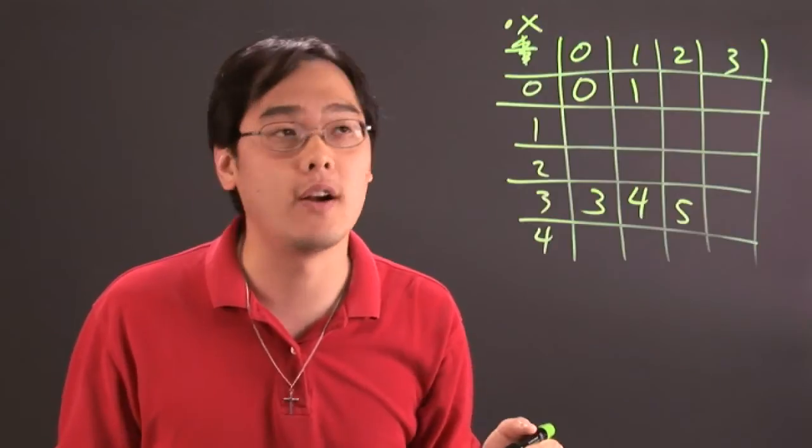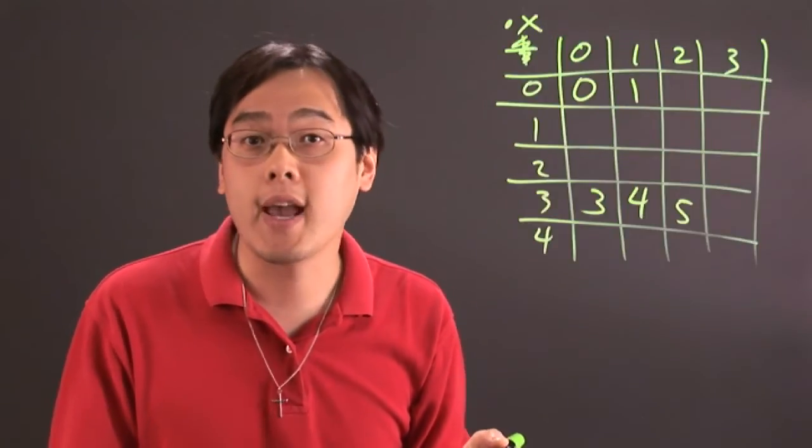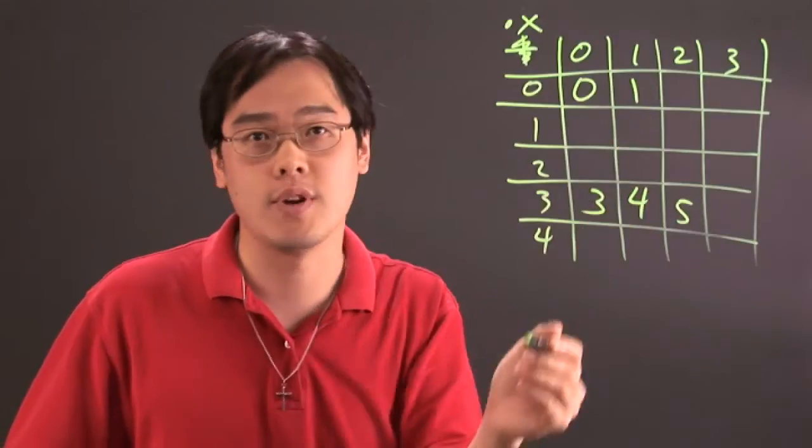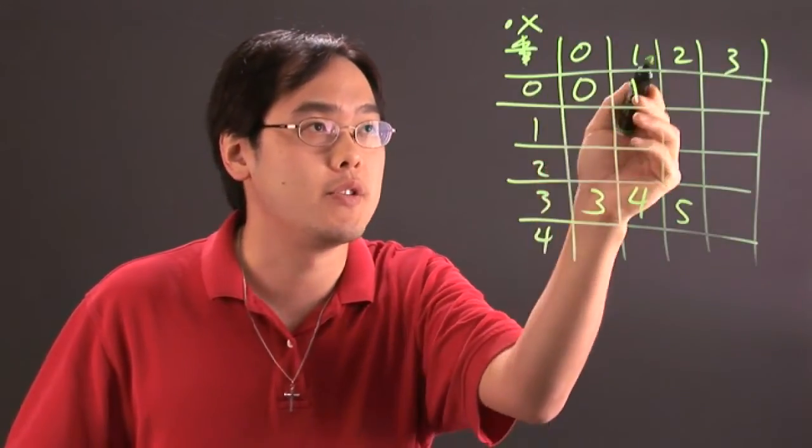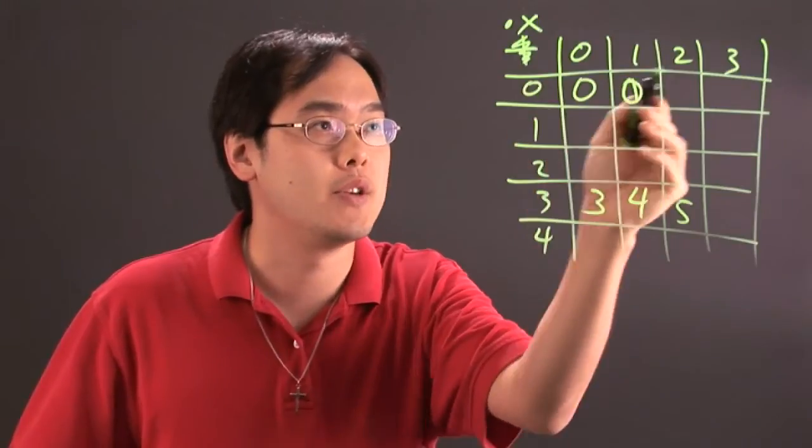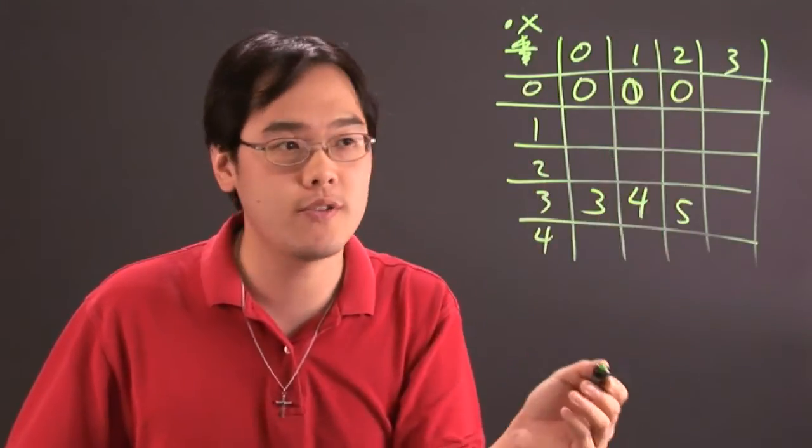And again, you correspond with each entry in the row to each entry in each column. So 0 times 0 is 0, 0 times 1 is 0, 0 times 2 is 0, so on and so forth.